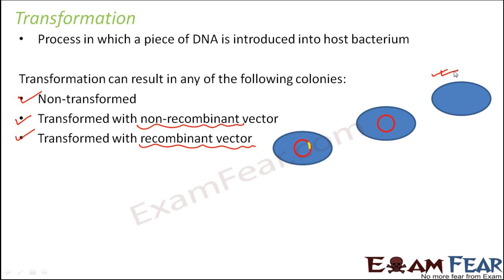The third option is it gets transformed with a recombinant vector, meaning the vector has the gene of interest. So: non-transformed undergoes no change at all; transformed with non-recombinant vector means the vector did not combine with the foreign piece of DNA; and transformed with recombinant vector means the vector contains that foreign piece of DNA. These are the three possible colonies formed as a result of transformation.